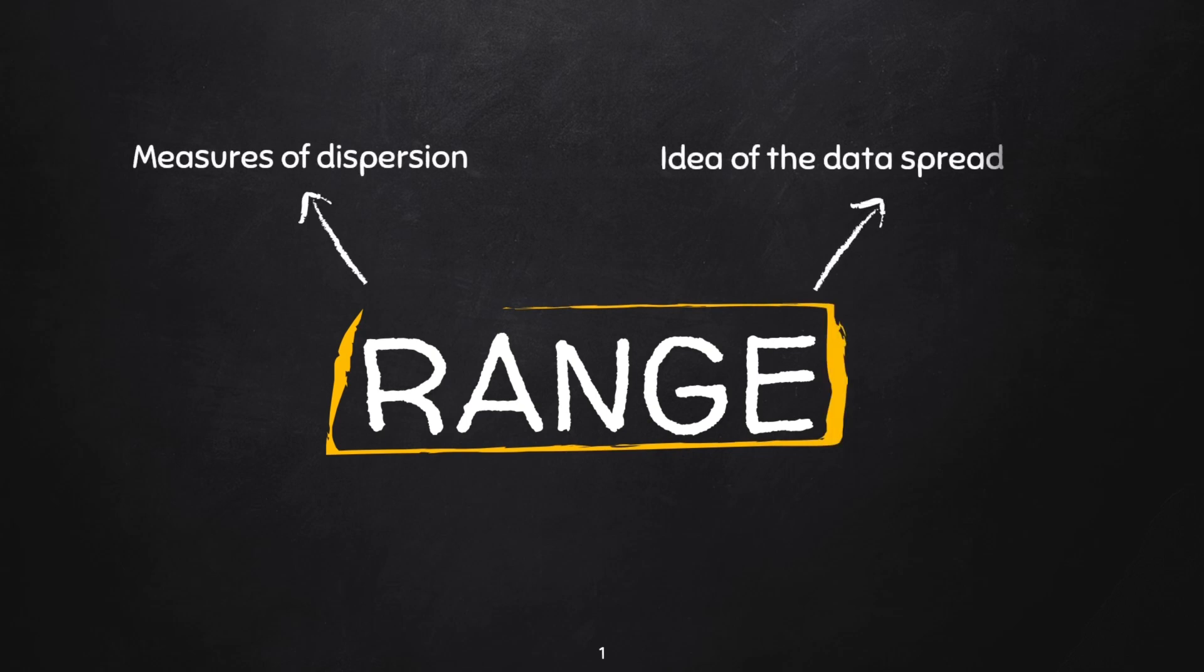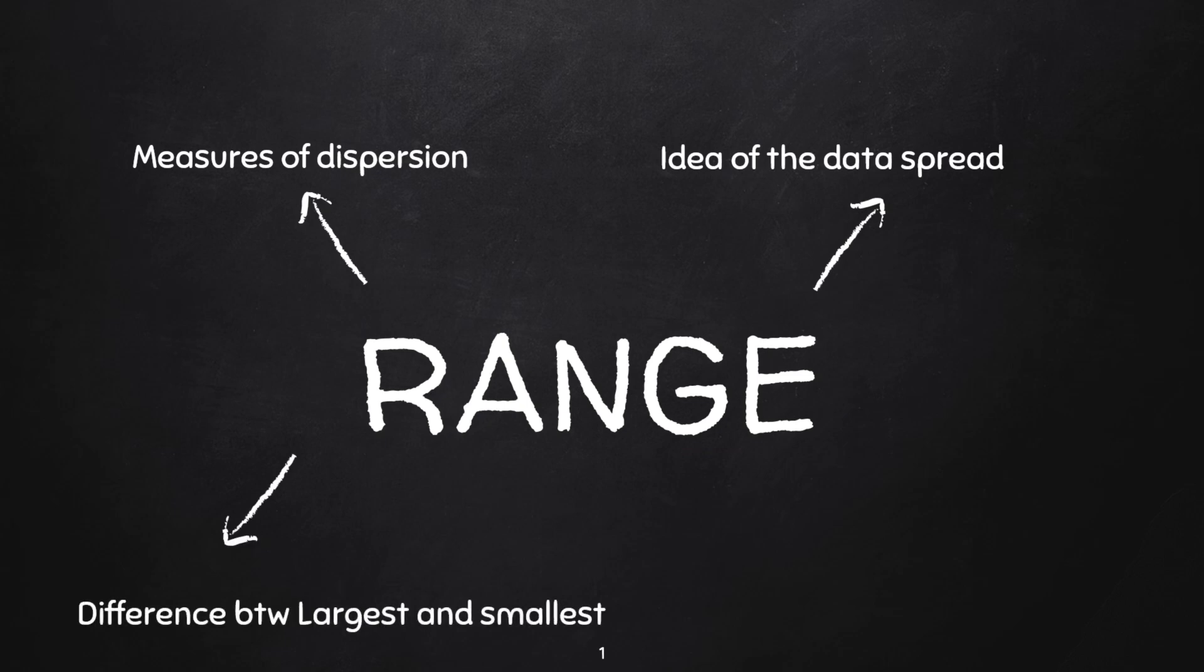It gives you an idea of how the data in a distribution is spread out or dispersed, and it does this by obtaining the difference between the largest and the smallest observation of the distribution.